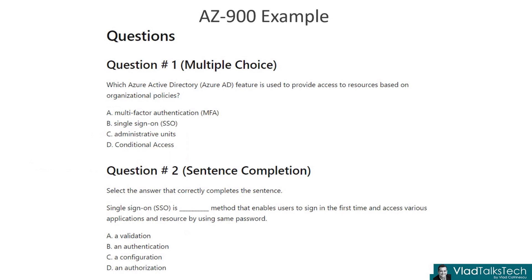This is an example from the AZ-900 certification exam, and you had 20 questions — either multiple choice, sentence completion, mix and match, things like that — either in a PDF document or on a Microsoft Learn webpage, and at the end you had the correct answers.